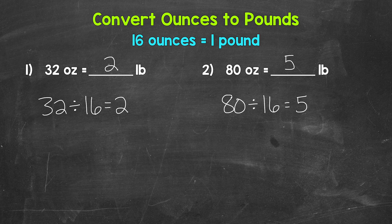Just remember, 16 ounces equals one pound. So we divide by 16 when converting ounces to pounds. And whenever we convert from a smaller unit to a larger unit, we divide. So something to keep in mind.